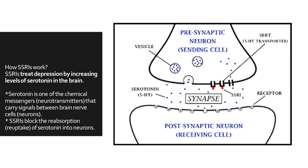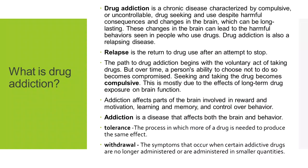By inhibiting reuptake, serotonin stays within your neuron, so people can feel its effect as the chemical messenger remains active. Not all of it is inhibited — it depends on the dosage. The function of SSRIs is to block the reabsorption or reuptake of serotonin into neurons so it stays within the neuron and is not transferred away to binding sites.